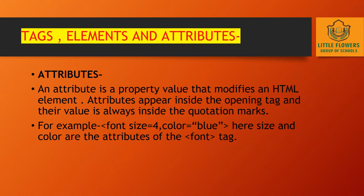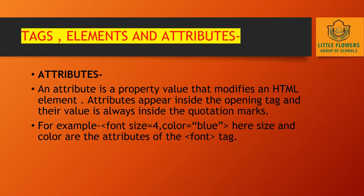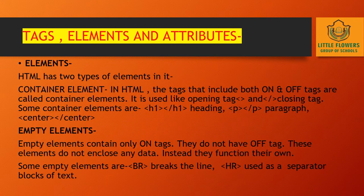Now tags, elements and attributes — firstly we are going to discuss attributes. An attribute is a property value that modifies an HTML element. Attributes appear inside the opening tag and their values are always inside quotation marks. For example: size equals 4, color equals blue.